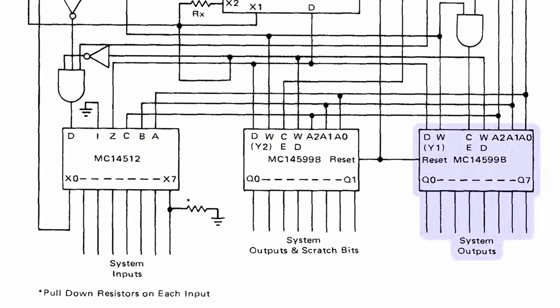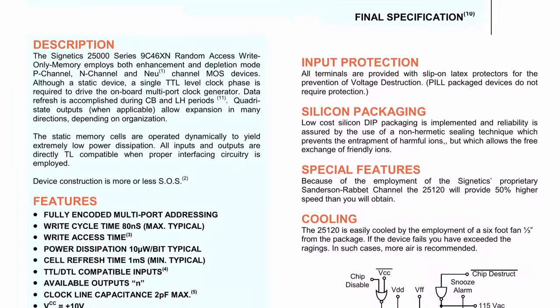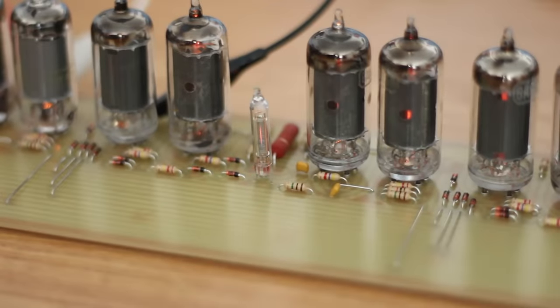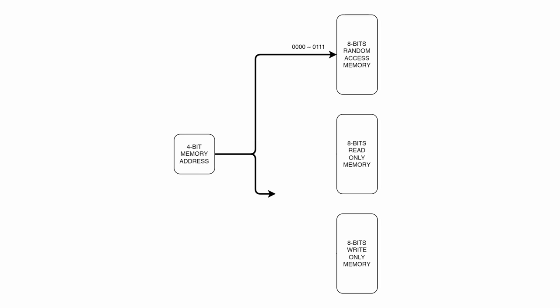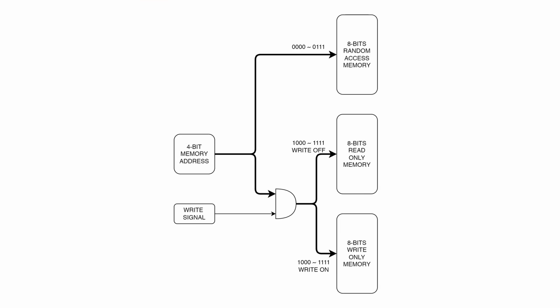Now the block on the far right is system outputs. This is write only memory. We can't read anything that we write to this back into the system, but anything that's external can actually see what was written there. And so that actually raises an interesting question. We have essentially 8 inputs, 8 outputs, and 8 bits of scratch register. That comes out to a total of 24 bits. How are we addressing 24 bits with just a 4-bit memory address? Well we're using the write pin. And whether the write pin is asserted or not changes which ones we're addressing. It's pretty clever.